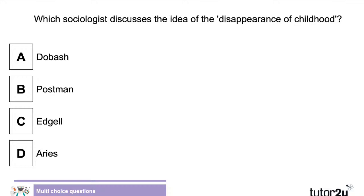Which sociologist discusses the idea of the disappearance of childhood? Is that A, B, C, or D? Lots of Bs coming through — and it was indeed B, Neil Postman. Well done.